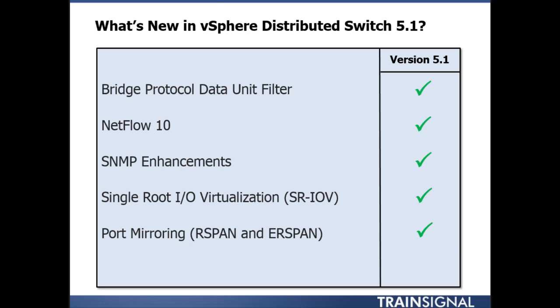Port monitoring with R-SPAN and ER-SPAN — standard network monitoring tools used to monitor VLAN trunks or individual switch ports — are now supported. The virtual distributed switch is compatible with these standard monitoring tools, allowing you to send all traffic on a particular vSphere distributed switch to, say, a network sniffer connected on the physical network to a different switch, giving you full visibility into the vSphere virtual network.